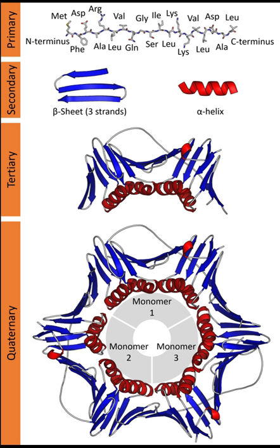The tertiary structure of a protein or any other macromolecule is its three-dimensional structure, as defined by the atomic coordinates. Proteins and nucleic acids fold into complex three-dimensional structures which result in the molecule's functions. While such structures are diverse and complex, they are often composed of recurring, recognizable tertiary structure motifs and domains that serve as molecular building blocks. Tertiary structure is considered to be largely determined by the biomolecule's primary structure.